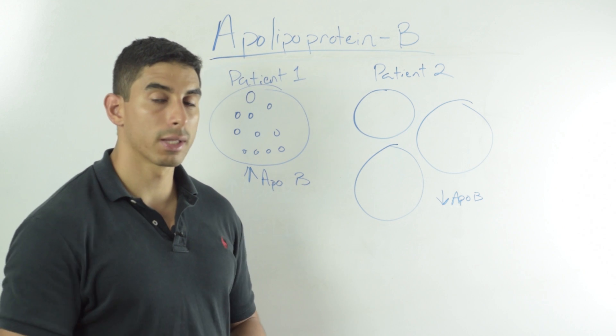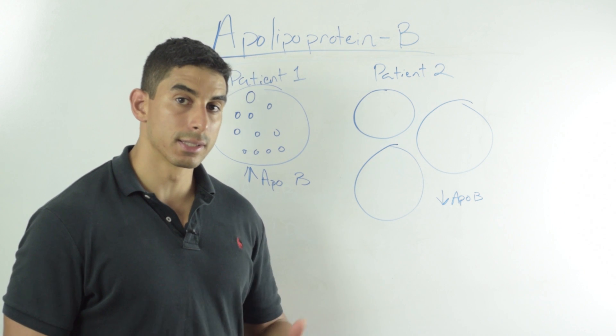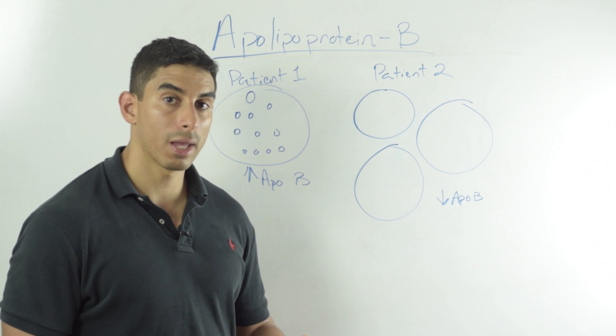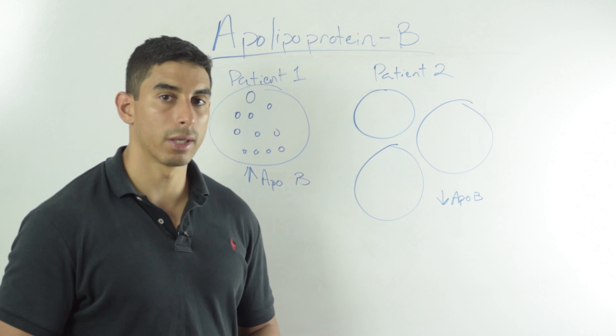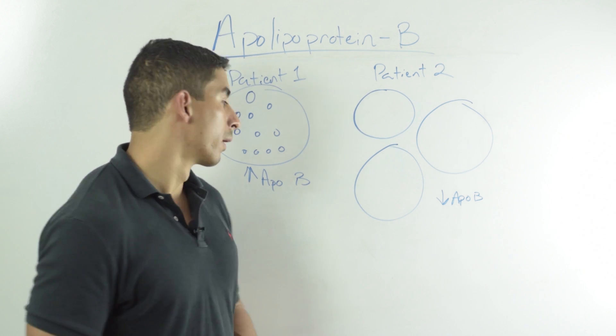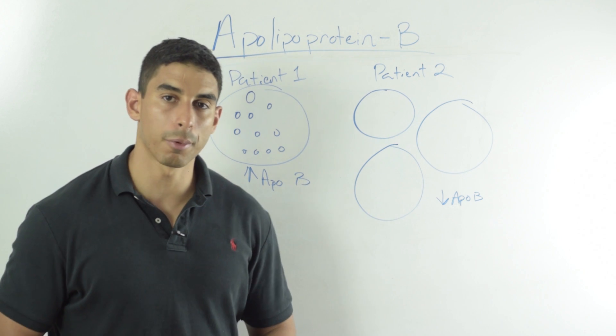So they will actually penetrate that layer of the blood vessel, get oxidized and lead to the development of fibrosis of a plaque and eventually create some blockage or break off and create a thrombus elsewhere. We want to avoid that and the best way to avoid that is to have a low number of ApoB particles.